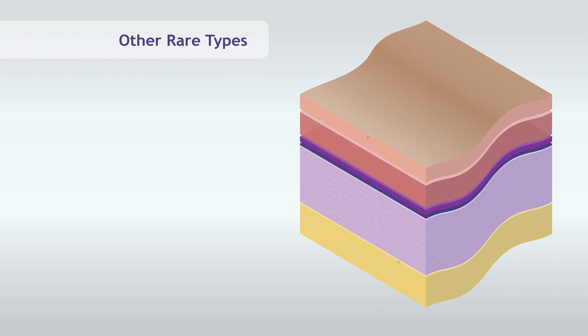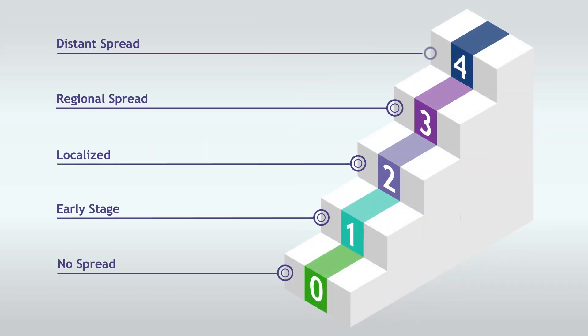There are also other, more rare types of skin cancer, like Merkel cell carcinoma. Following a skin cancer diagnosis, the first step is to determine the stage of your skin cancer. The stage indicates the extent and spread of the cancer.